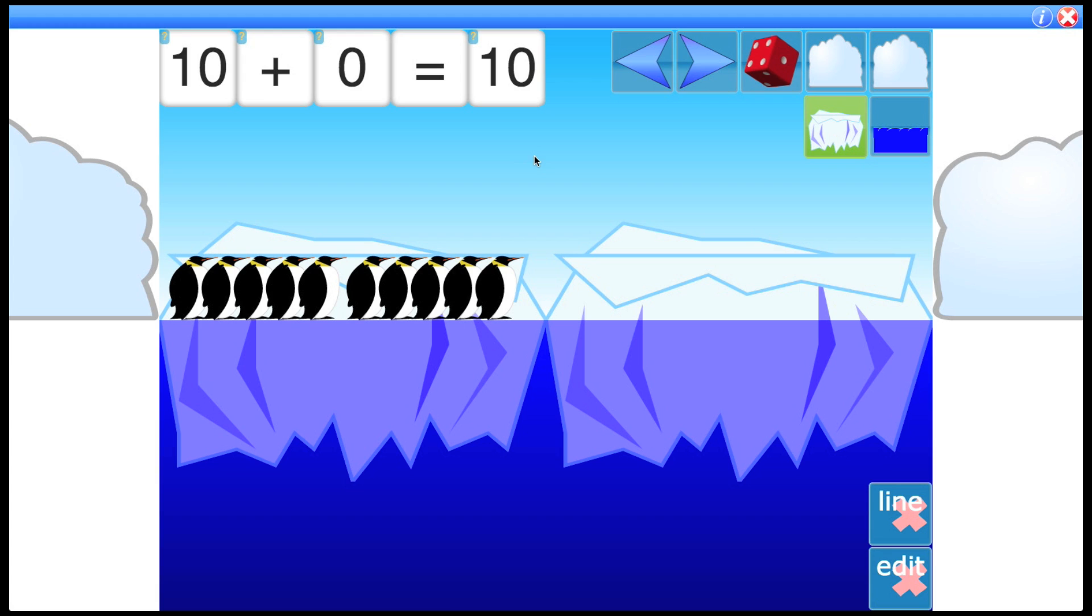In all the activities of Visnos, when you move over a control you'll see that the description appears for what the control does. So this arrow here is to move penguins between the icebergs. So I click it, the penguin moves over and the fact changes to 9 plus 1 equals 10. So you can go through all the particular facts using this method, and you can send them backwards by clicking the left arrow.